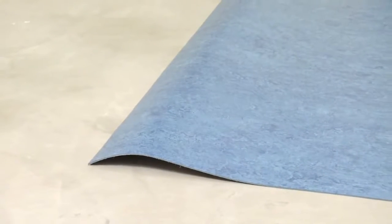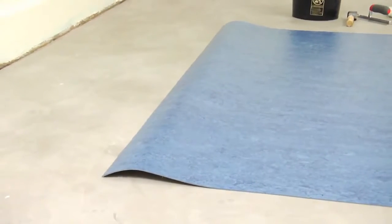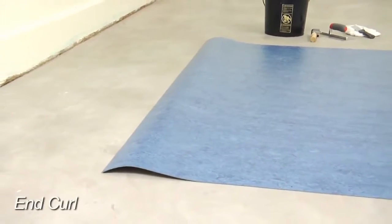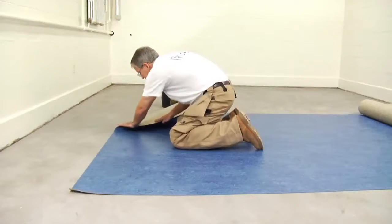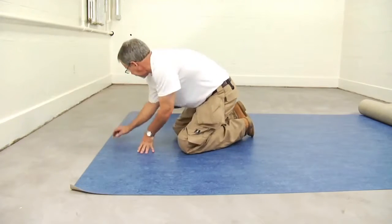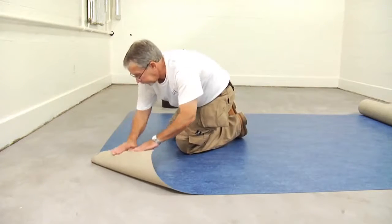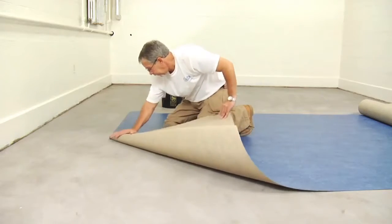Marmoleum sheet flooring comes on a roll and retains a memory that needs to be relaxed or removed from the material as it's being installed. We call it N-curl. N-curl can be easily removed by a process called massaging the material. To do this, fold the material back on a 45-degree angle and massage it to relieve or relax the material.